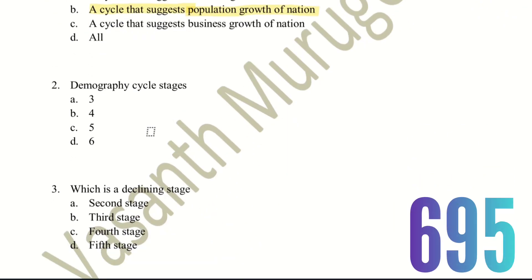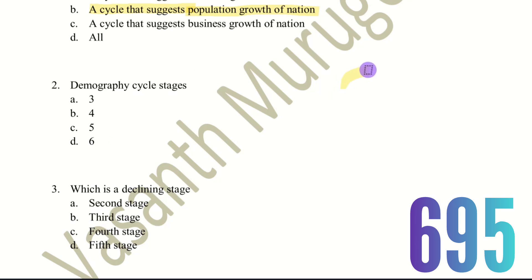Second question — also about the demography cycle. The demographic cycle has stages, like a cycle. There are 5 stages in the demographic cycle.